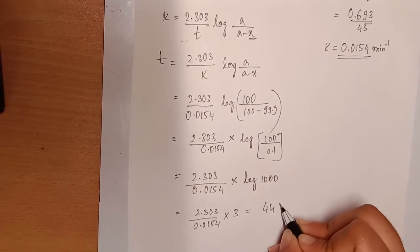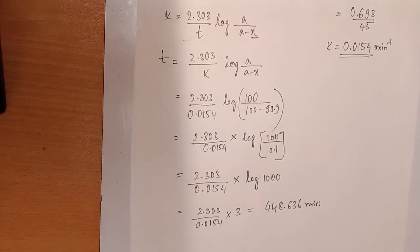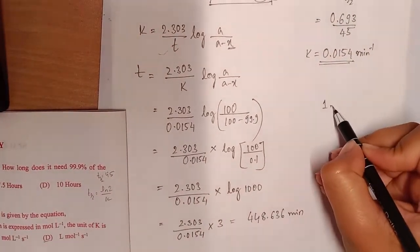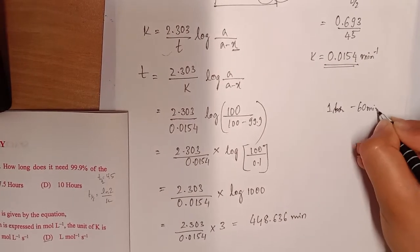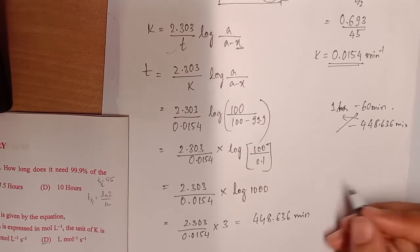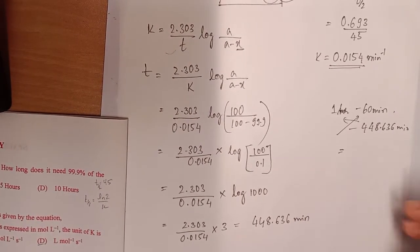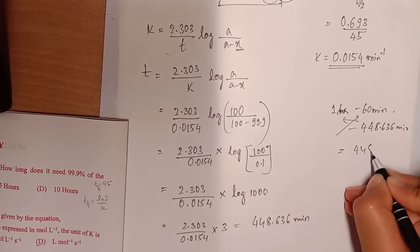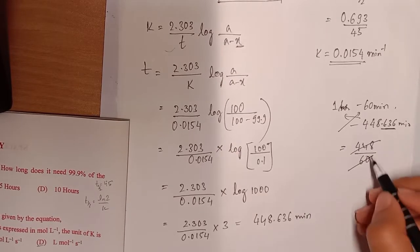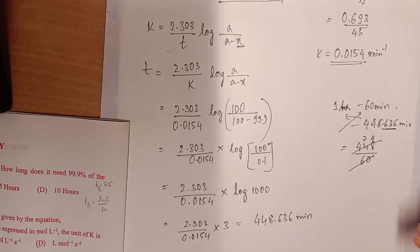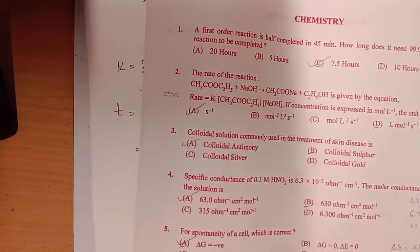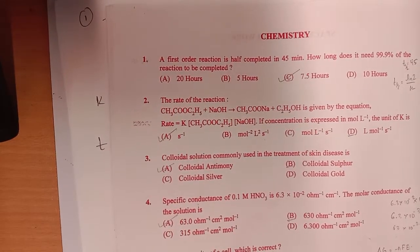We get the answer as approximately 448.636 minutes. We need to convert this into hours since all options are in hours. One hour has 60 minutes, so we divide 448 by 60. To make calculations easier, 6 sevens are 42, 6 fours are 28 — so this is somewhere around 7.4, and the answer is option C: 7.5 hours. There's no other option close to 7-point-something, so we can get answers easily by approximating.